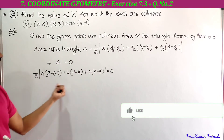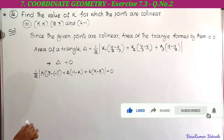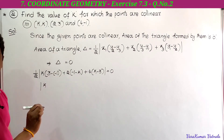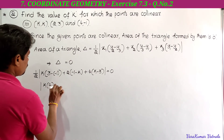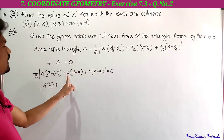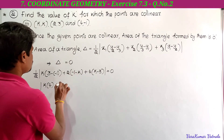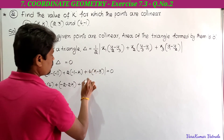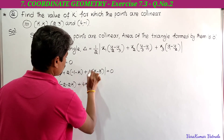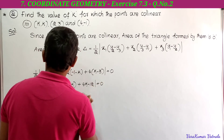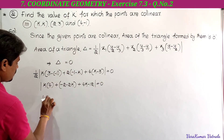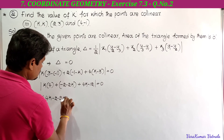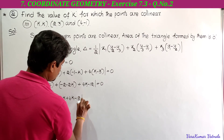Taking 2 to the right gives 0. So: k into (3 + 1) = k into 4 = 4k. Plus 2 into (-1 - k) = -2 - 2k. Plus 4 into (k - 3) = 4k - 12. So expanding: 4k - 2 - 2k + 4k - 12 = 0.